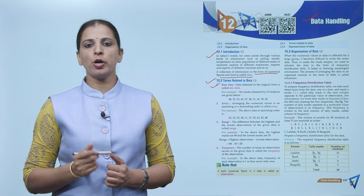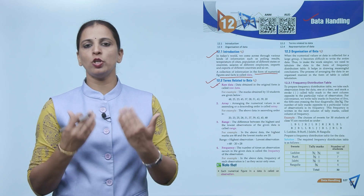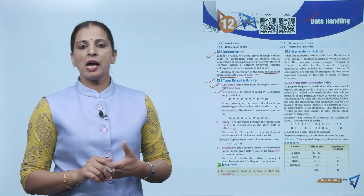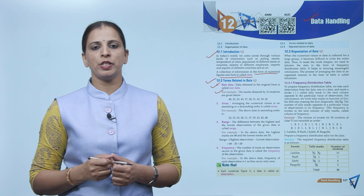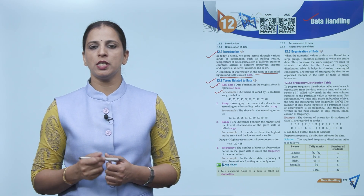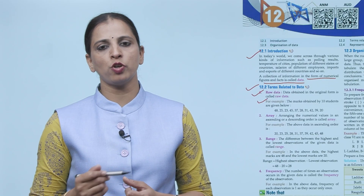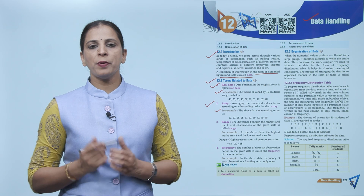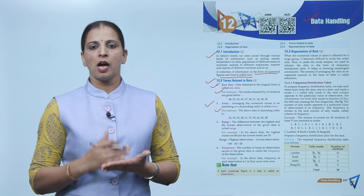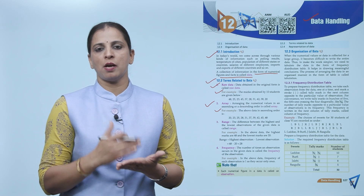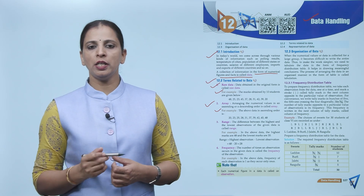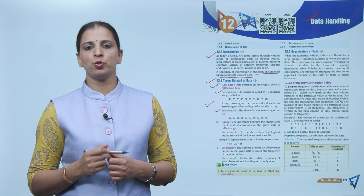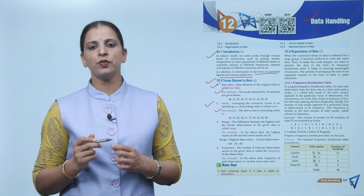Data obtained in the original form is called raw data — jo information jaisi mili, as is, woh raw data hai. For example, the marks obtained by 10 students are: 48, 25, 23, 45, 37, 28, 31, 42, 39, 20. Arranging this data in ascending order (from smallest to largest) gives: 20, 23, 25, 28, 31, 37, 39, 42, 45, 48. This arranging of numerical values is called an array.